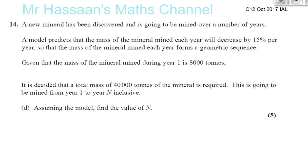A new mineral has been discovered and is going to be mined over a number of years. A model predicts that the mass of the mineral mined each year will decrease by 15% per year, so the multiplying factor is going to be 0.85. That's the common ratio.